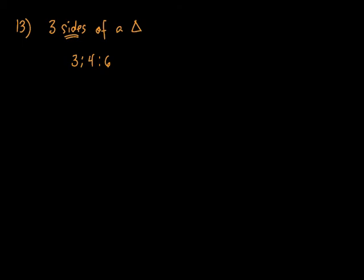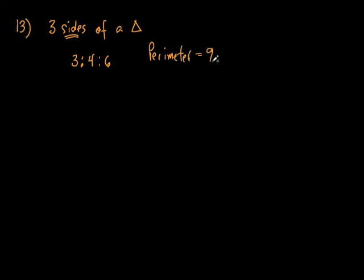Does that mean one of the sides is exactly 3 inches, the other exactly 4, exactly 6? No. It means for every 3 you go on this side, you go 4 on this side and 6 on this side. That means this side right here is twice as big as this side. What else does it tell you? It says the perimeter is 91.